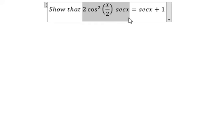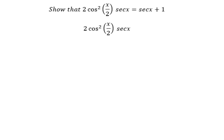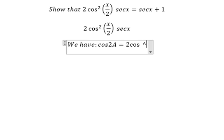We have this one here. Now we have the formula, that's about cosine 2A equal to 2 cosine squared A minus 1.